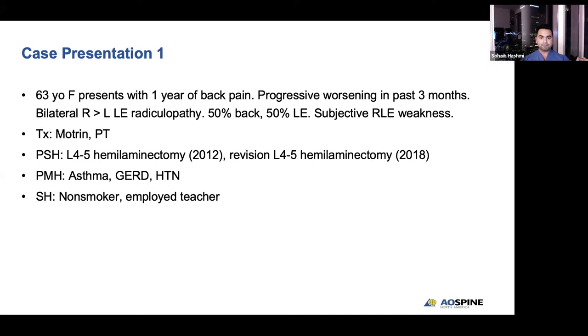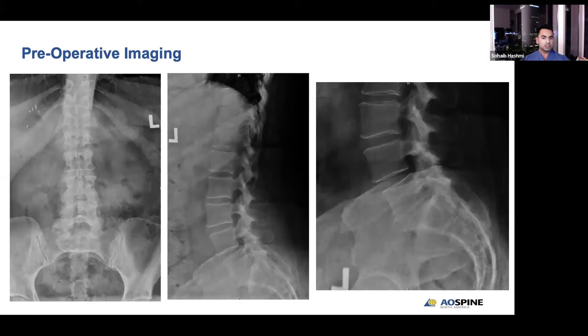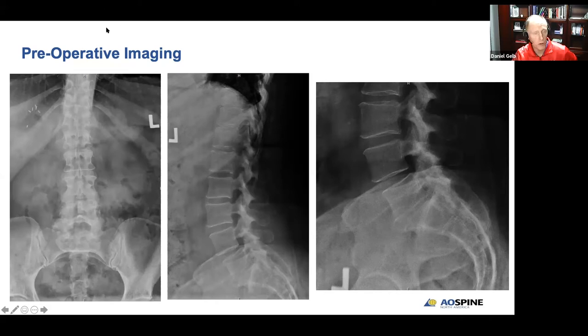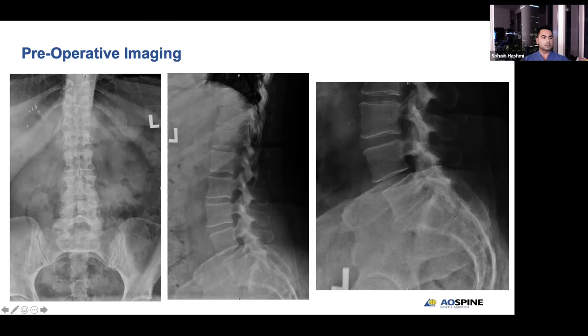She presents for evaluation with standing lumbar spine AP and lateral images, which demonstrate L4-5 grade one degenerative spondylolisthesis. She does have a very small component of degenerative scoliosis as well, however that is minor. I'll add that she was originally seen by telemedicine — she's a relatively recent patient since COVID started — and she has no fixed neurologic deficits in her lower extremities. She is neurologically intact.